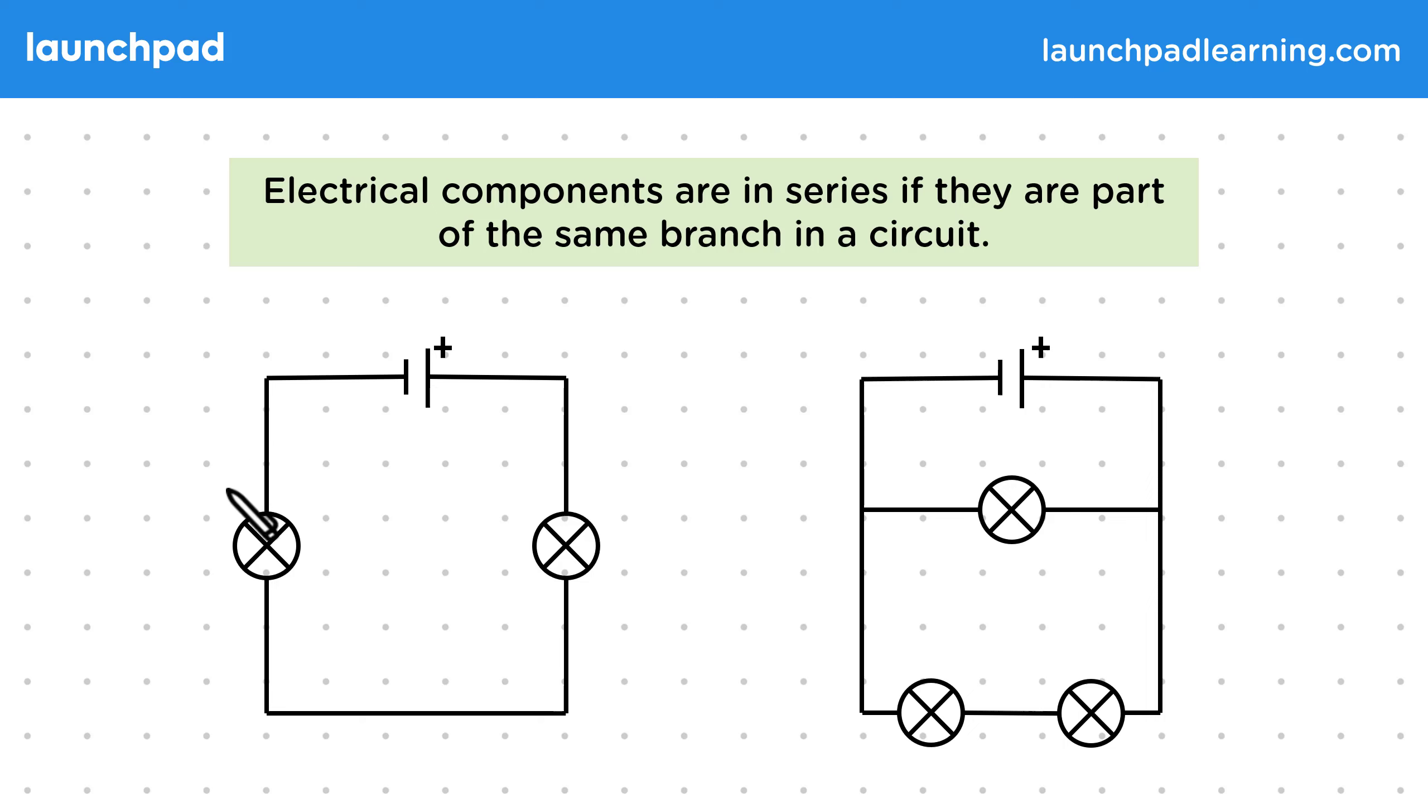On the left there are no branching paths around the circuit, meaning both these lamps are on the same branch.